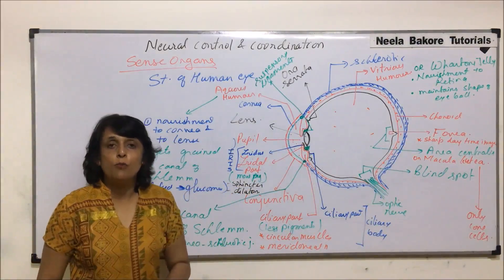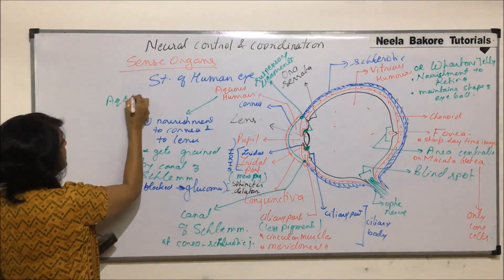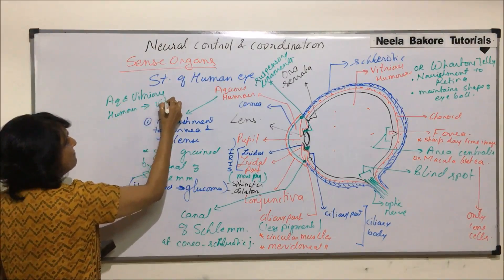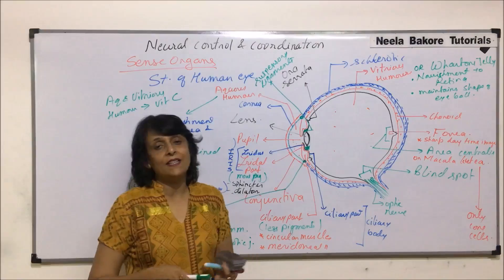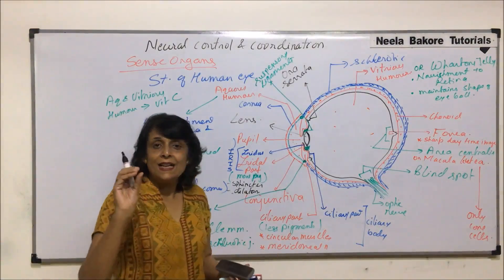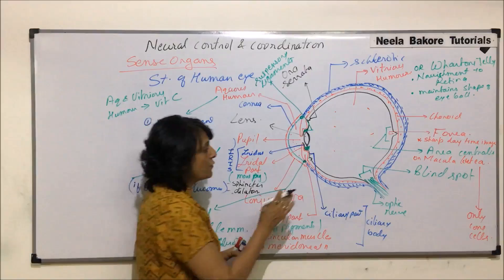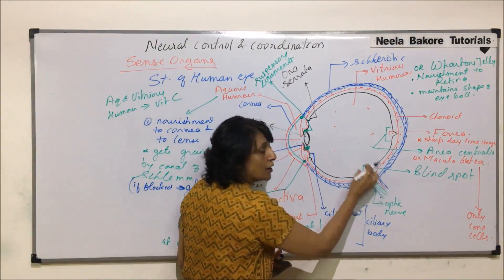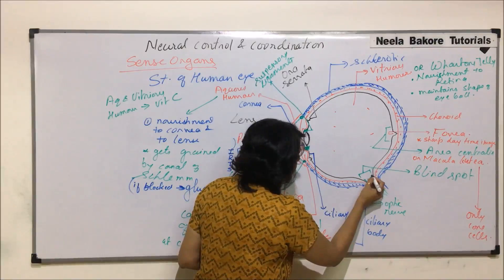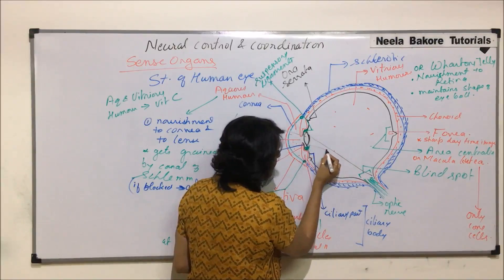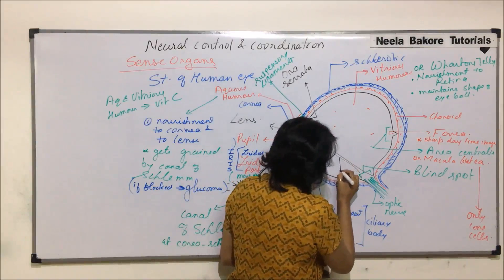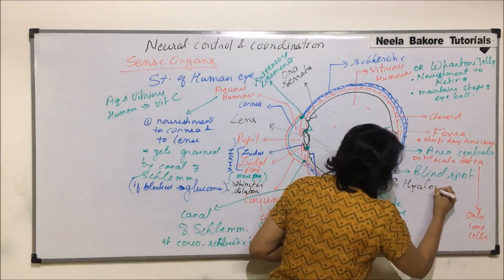One more important point about aqueous and vitreous humor: both are rich in vitamin C — they have a high vitamin C content. Additionally, there is a transparent canal which runs through the vitreous humor, starting from where the optic nerve emerges and going up to the lens. This narrow transparent canal is known as the hyaloid canal.